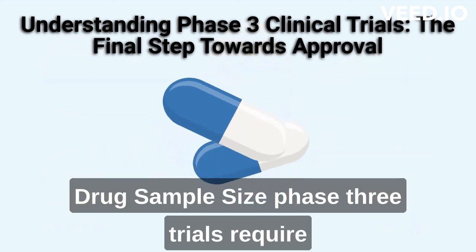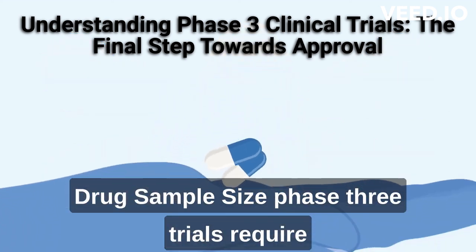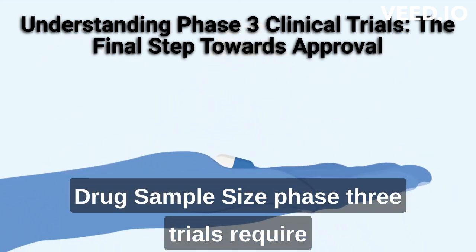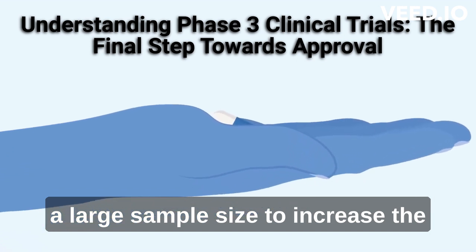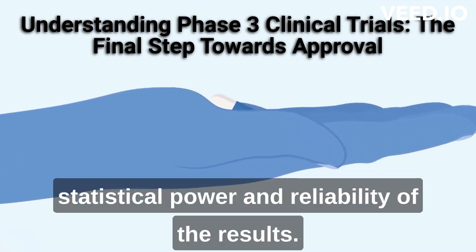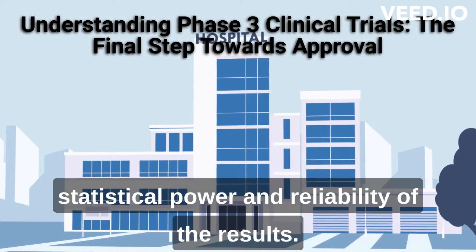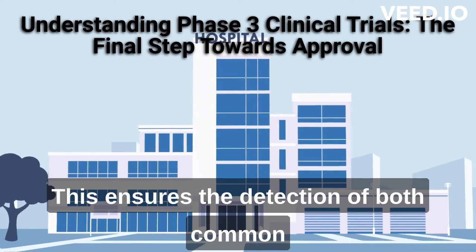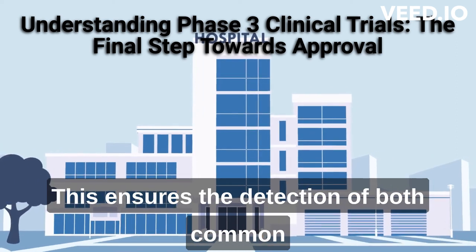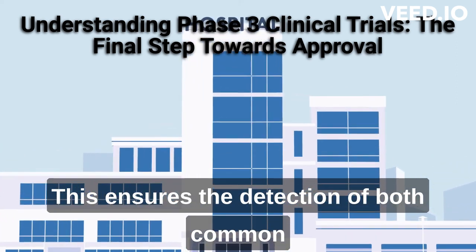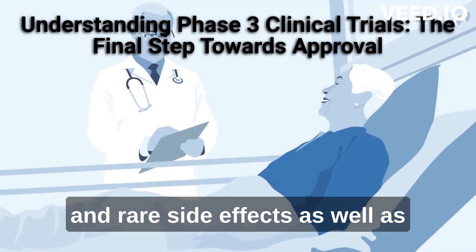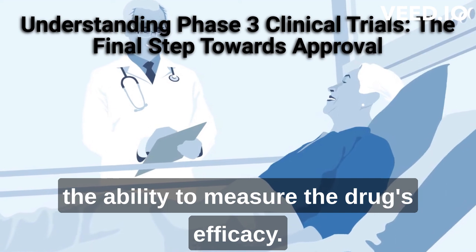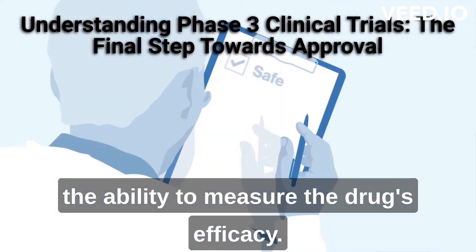Sample size: Phase 3 trials require a large sample size to increase the statistical power and reliability of the results. This ensures the detection of both common and rare side effects, as well as the ability to measure the drug's efficacy.